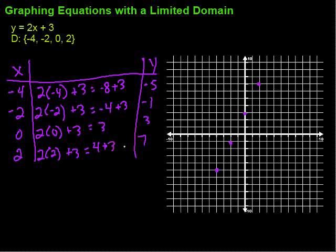So graphing equations with a limited domain means simply that we're given some x values. Remember the domain is the set of the x values that we're going to plug into our function, whatever it is, our equation. And then, once we get our ordered pairs, graph it up. But remember, don't connect the dots because we're limited. And if we do connect the dots, that's saying we have all these other values in the domain as well, which is not true. Hope this video was helpful. Keep working hard on your math. You can do it.